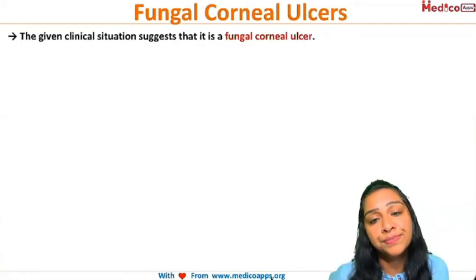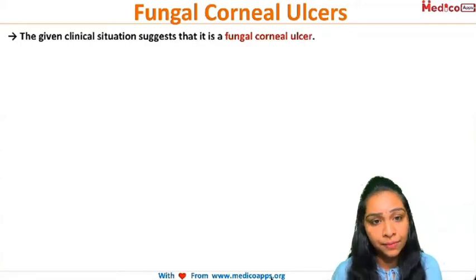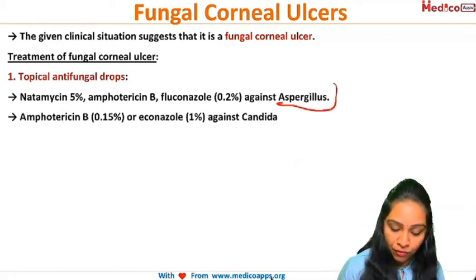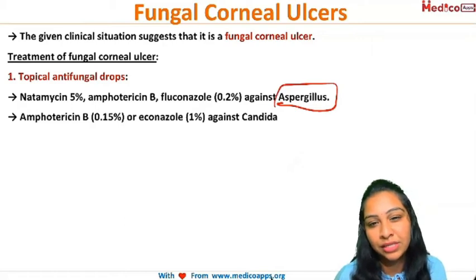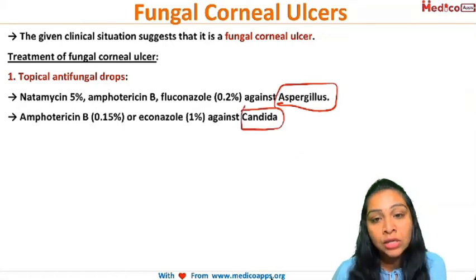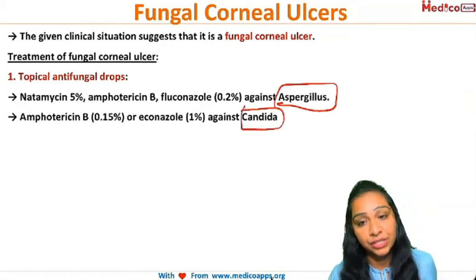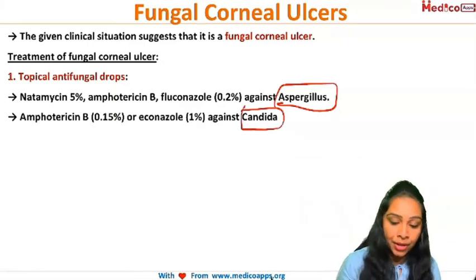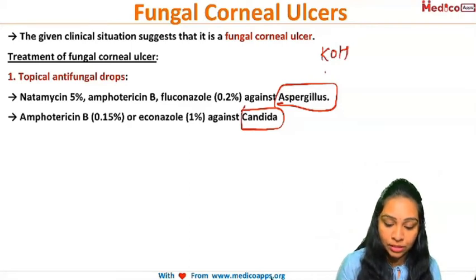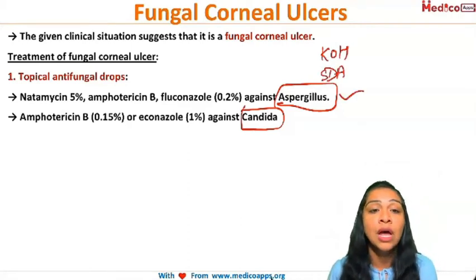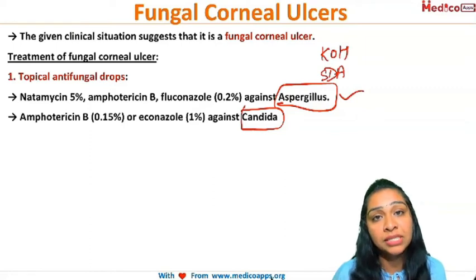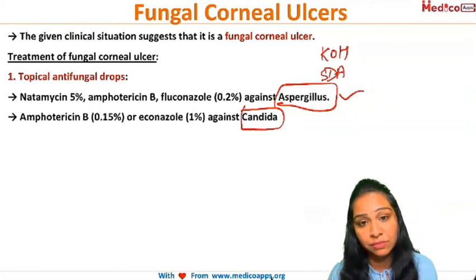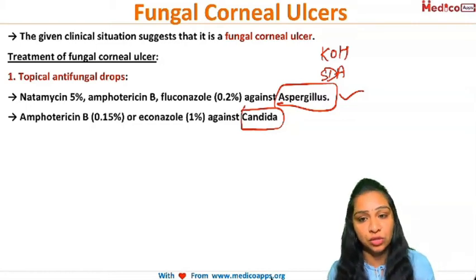We have arrived at the diagnosis of fungal corneal ulcer. There are two main fungi causing fungal corneal ulcers in our country: Aspergillus and Candida. After culture using KOH mount along with Sabouraud's dextrose agar to confirm the diagnosis, we give Natamycin 5% eye drops for Aspergillus infection, along with Amphotericin B or Fluconazole.